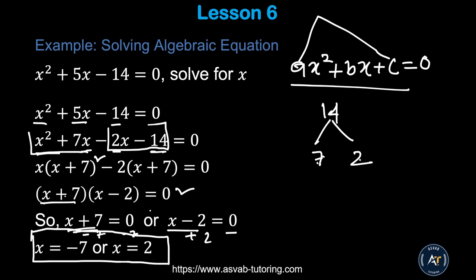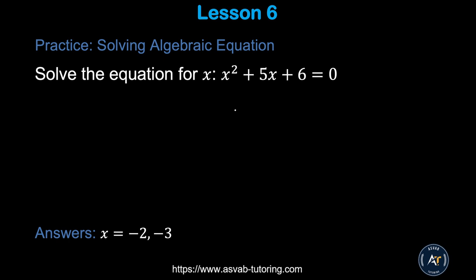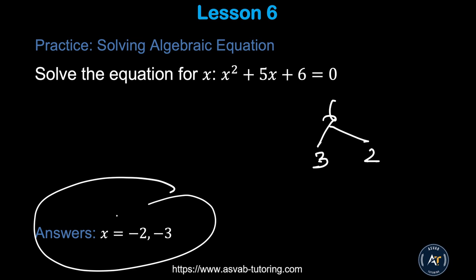You'll see this type of quadratic equation at least one or two times on the actual test. Try the practice problem yourself: split 6 into 3 and 2 (since 3 × 2 = 6 and 3 + 2 = 5), factor, and solve. Make sure you get x = −2 and x = −3.